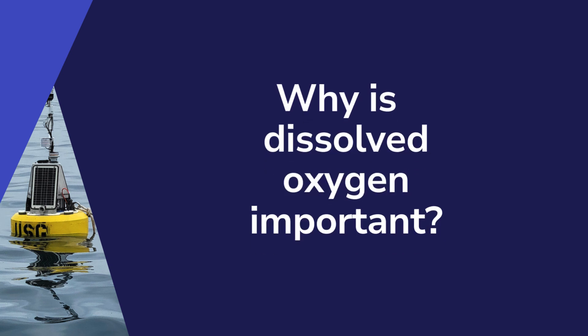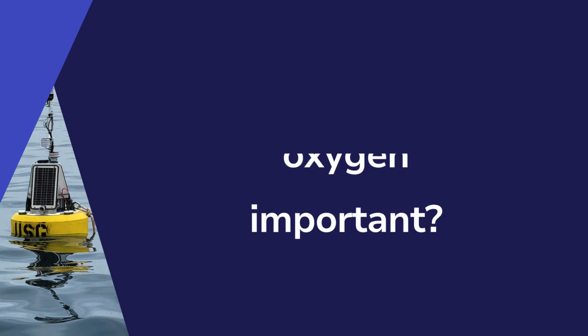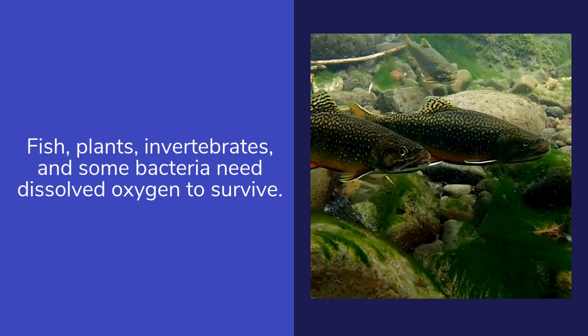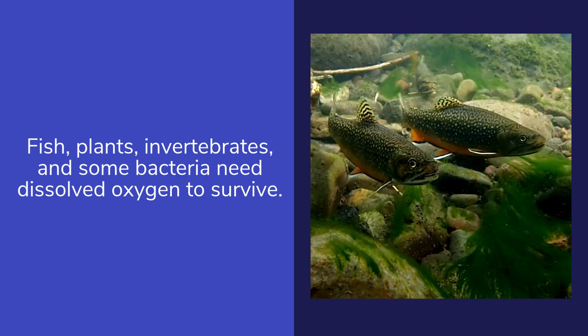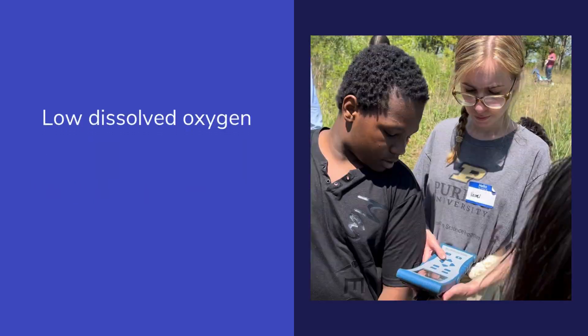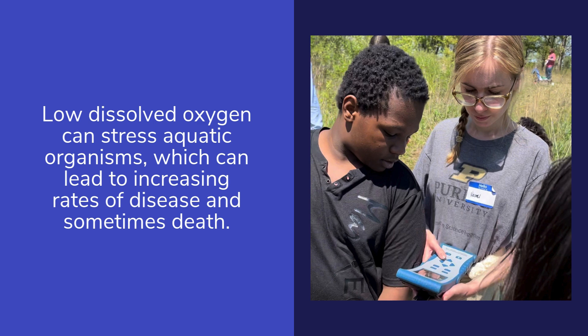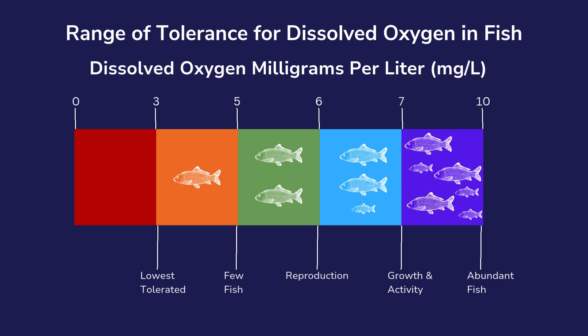Why is measuring dissolved oxygen important? Fish, plants, invertebrates, and some bacteria need dissolved oxygen to survive. Low dissolved oxygen can stress aquatic organisms, which can lead to increasing rates of disease and sometimes death. For example, dissolved oxygen levels can be stressful for fish, while ample oxygen levels allow them to reproduce and grow.